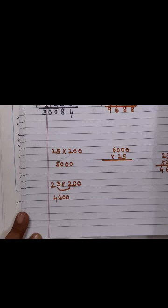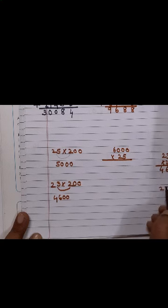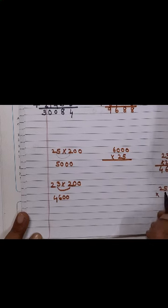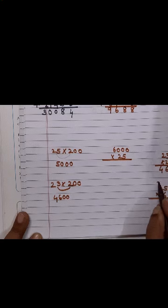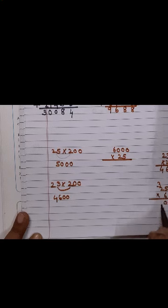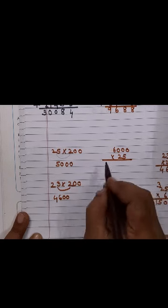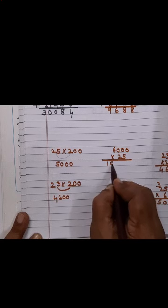25 into 6 is how much children? What did I tell you? Those who don't know, please do it here. 6, 5 times 6 is 30. 6, 2 times 12 is 13, 14, 15. So 150. Now children, be very careful here.